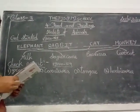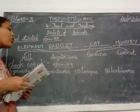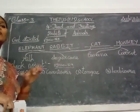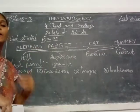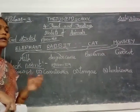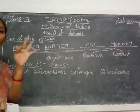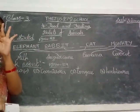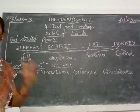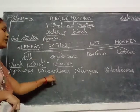Animals that eat only the flesh of other animals are called — what type of animals, children? Carnivores, omnivores and herbivores. Three types of animals are there. Here, only eating the flesh of animals are called carnivores.